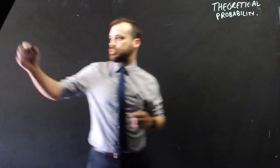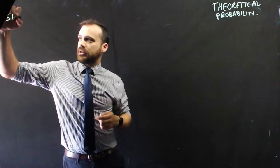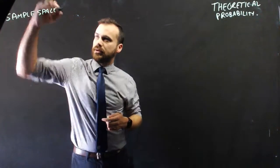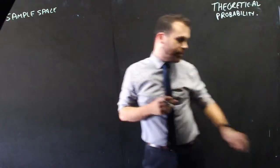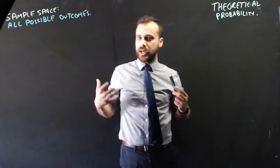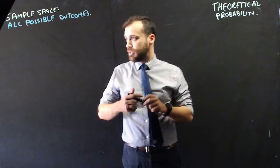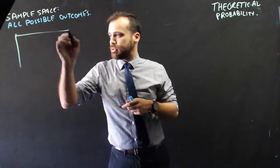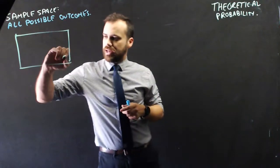Alright, so first thing we need to talk about, which you've definitely done before, is sample space. So sample space in a nutshell is really all possible outcomes, or at least all possible outcomes under consideration. And when you think about that, sample space is actually the universal set.